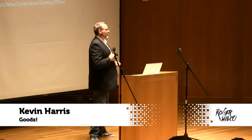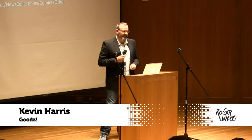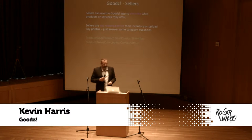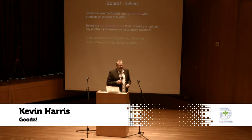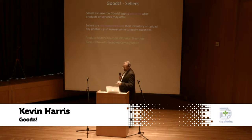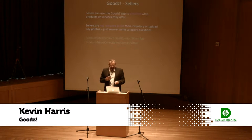This brings up our app called Goods. How does this help sellers? Sellers can use the Goods app to describe the products and services that they offer. Sellers are not required to list their inventory or upload a million photographs — they just answer some category questions about the products and services they offer. For example, a comic book store could have products in the category: used, collectibles, comic, Silver Age. We also sell new comic books, so we'd be in another category: product, new, collectibles, comics, and other.